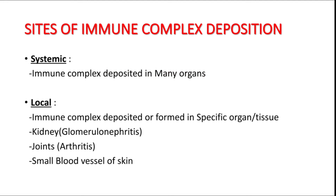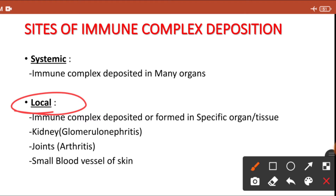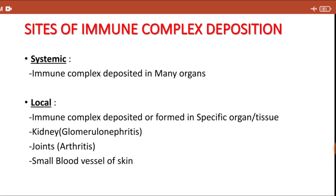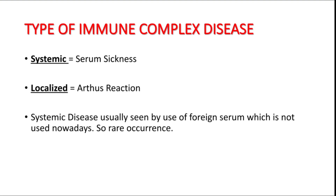Once the immune complex forms, they can get deposited in specific organs. If they get deposited in many organs like joint, liver, and kidney, it is known as systemic type 3 hypersensitivity. If the formed immune complex deposits in a specific organ like the kidney, joint, or blood vessel of the skin, then it is known as localized hypersensitivity reaction, and most reactions are localized.